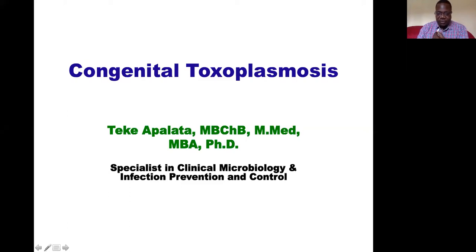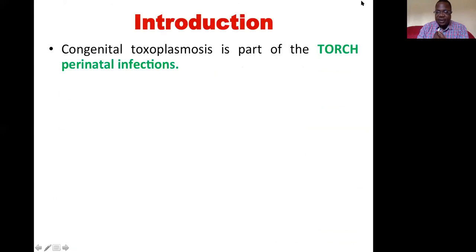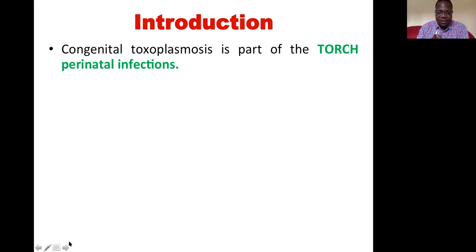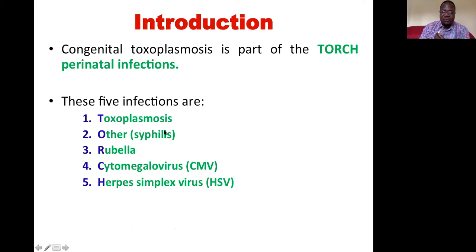Let's look at congenital toxoplasmosis. First, congenital toxoplasmosis belongs to a group of diseases described by the acronym TORCH. TORCH is a list of five infections: T for toxoplasmosis, O for other infections like syphilis, R for rubella, C for cytomegalovirus, and H for herpes simplex virus.